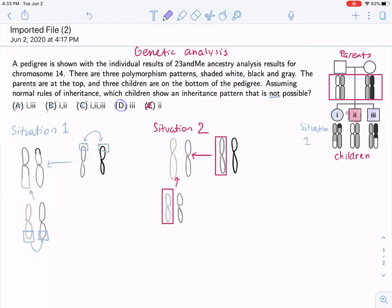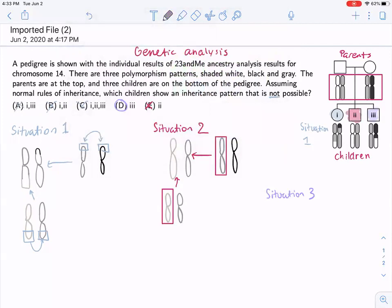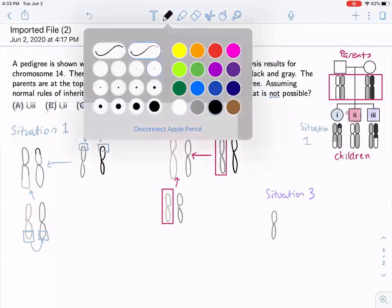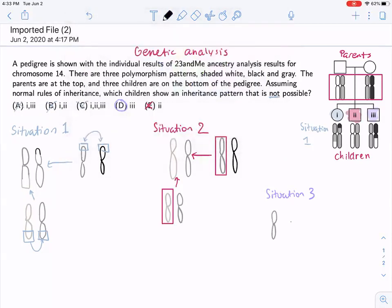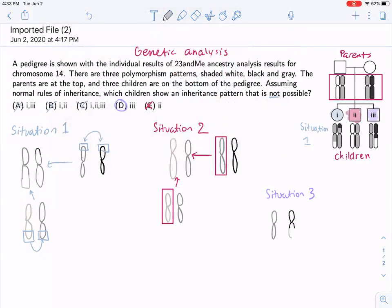So in situation three, that I'll draw over here in the bottom right, I have a dark gray chromosome. And then I have half of a black one and half of a white one, or at least kind of half, two-thirds, maybe. And the lighter gray.